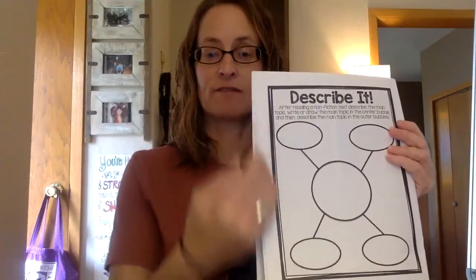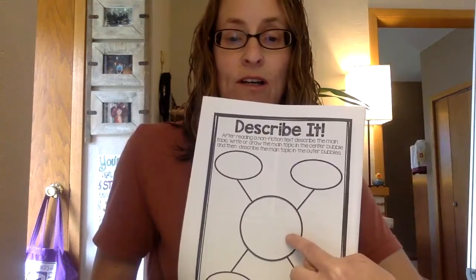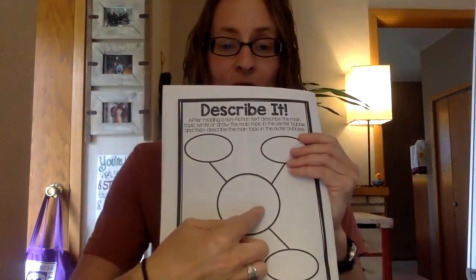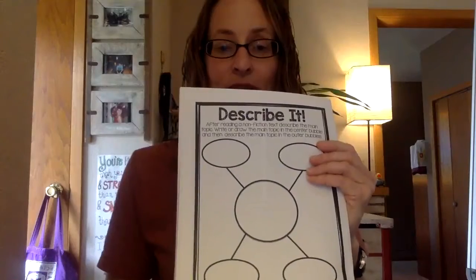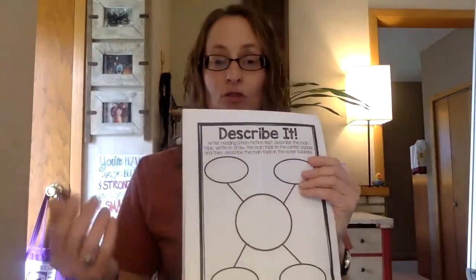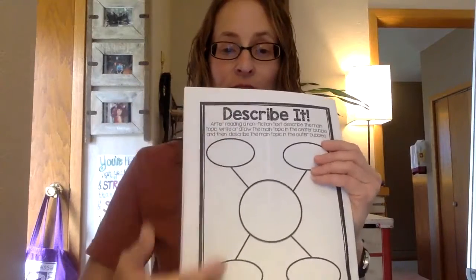The directions say: after reading a nonfiction text — which is the animal passages — describe the main topic. Write or draw the main topic in the center bubble. Then describe the main topic in the outer bubbles. Your animal goes in the center, and you're going to pick four different ways the author used to describe that animal. You can write sentences, short phrases, or draw pictures.